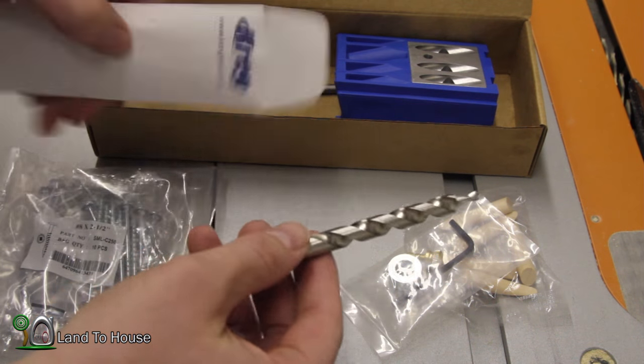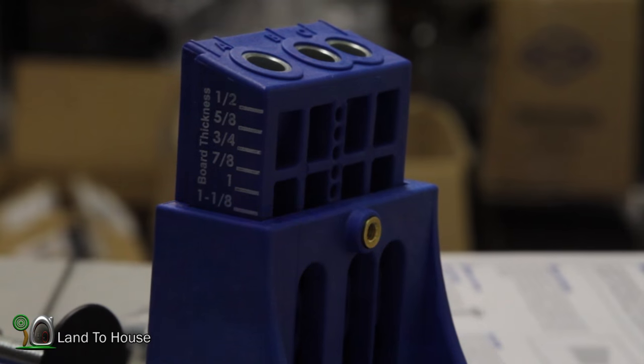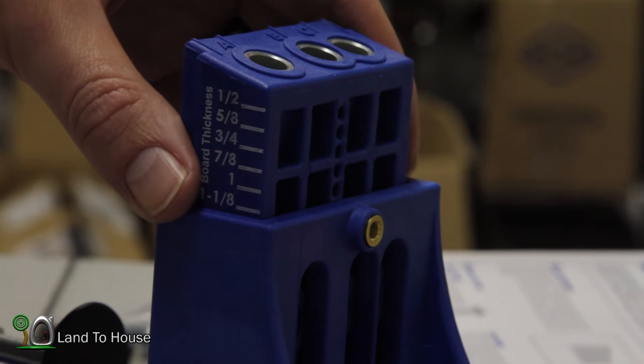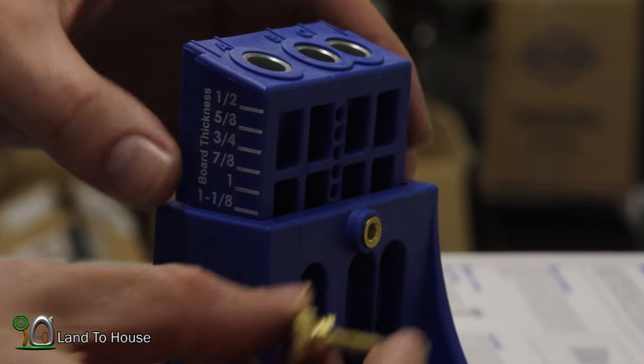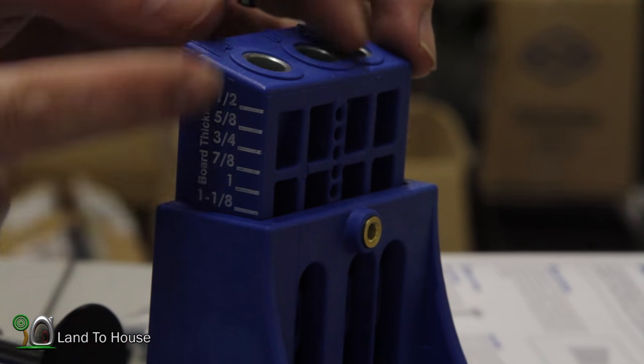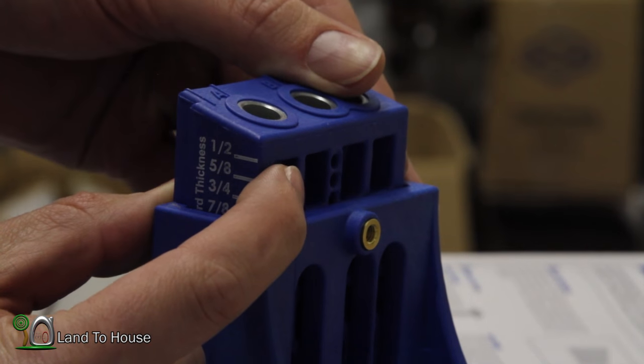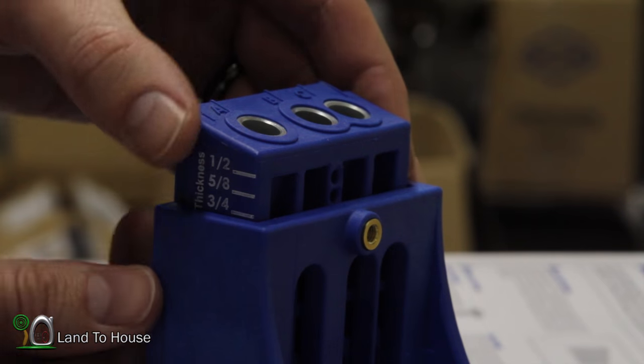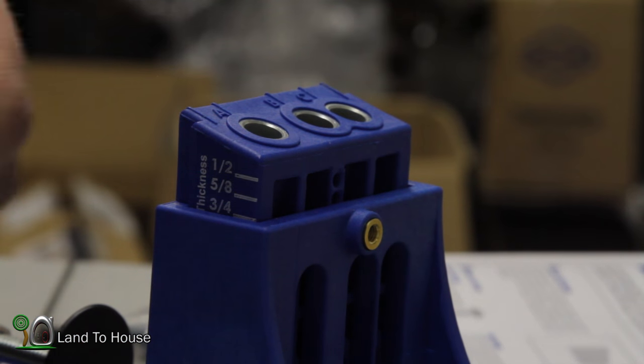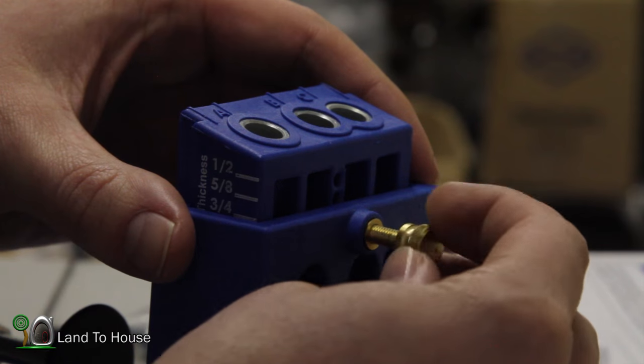So let's give this thing a try. Just checking out the instructions here. It says this little golden screw is used to set the depth of this piece. So I'm going to be using three-quarter. So I've got that lined up here.